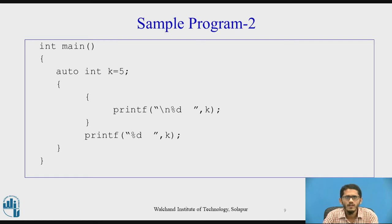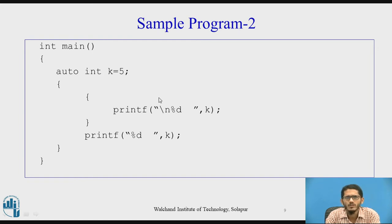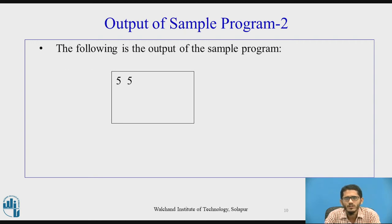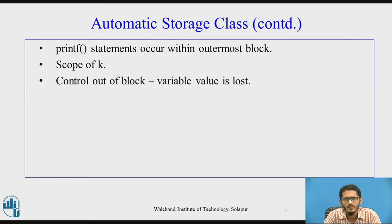In another example, a variable k is declared with auto storage class and initialized to 5. Inside an inner block, the value of k is displayed, and just outside that inner block the value is also displayed. In both cases the output is 5, demonstrating that the variable k remains in scope within the outer block. Once control goes out of the block, the variable value will be lost.